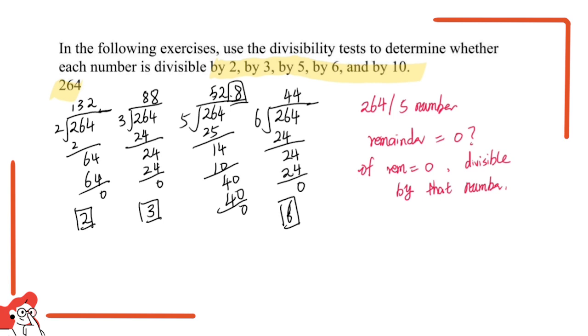Last we have 10. It's very easy to do this because 264 over 10 equals 26.4. We just move the decimal place one place to the left. We can see it's not a whole number, we have a decimal, so 10 is not one of the answers. 264 is not divisible by 10.